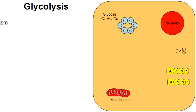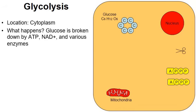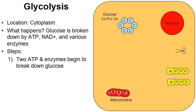Starting with glycolysis: it takes place in the cytoplasm of a cell. That blue hexagon labeled glucose is going to be broken down by molecules of ATP, a molecule called NAD, and various enzymes. For simplicity, only the six carbons of glucose are shown, but glucose also has 12 hydrogens and six oxygens. Two molecules of ATP plus enzymes begin to break down glucose.